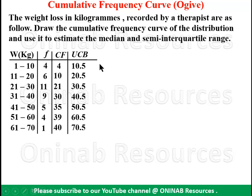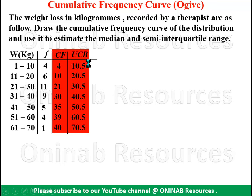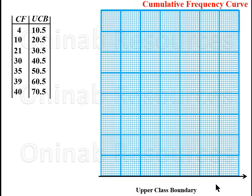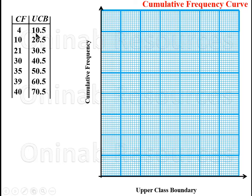So we are going to use these two columns to draw our graph. First we draw the horizontal axis which represents the upper class boundary, and the vertical axis which represents the cumulative frequency, and we calibrate them. Remember there should be a class interval before the first one, and the upper class boundary of that class interval is 0.5.